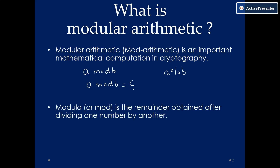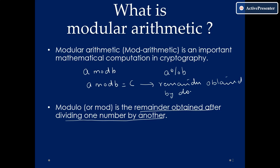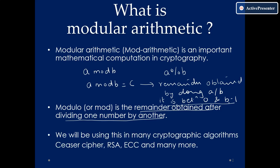What is C? C is basically the remainder which is obtained after dividing one number by another — C is the remainder obtained by doing A divided by B. Moreover, C is always between 0 and B minus 1, so you will always get the answer between 0 to B minus 1. We use these operations in many cryptographic applications such as Caesar cipher, RSA, ECC, and many more.